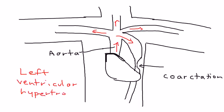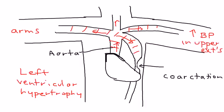The next thing that happens, take a look at what's happening in the upper extremities. The pressure before the coarctation in this area that I'm drawing red lines in will be higher, so you will have essentially increased blood pressure in the upper extremities. Similarly the pressure after the coarctation in this area will be lower, so you will have lower blood pressure in the lower extremities.